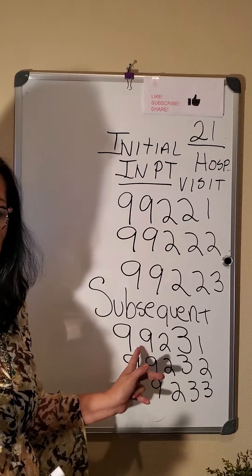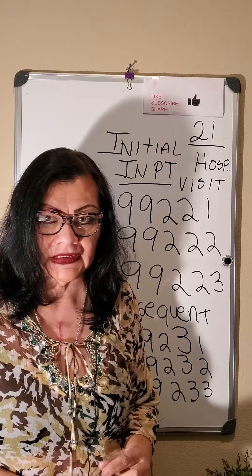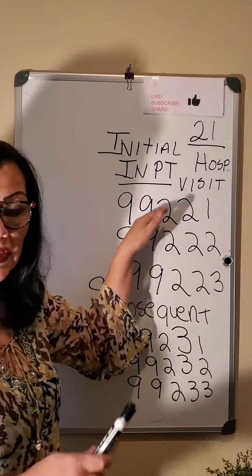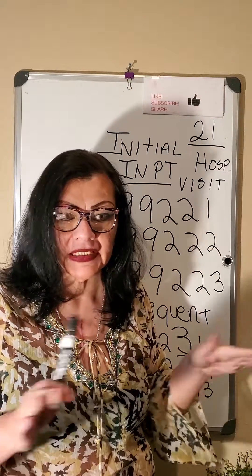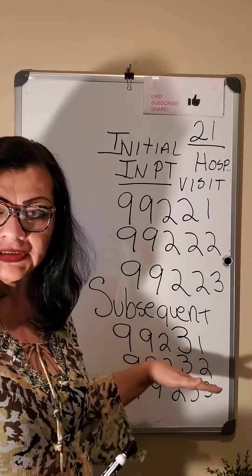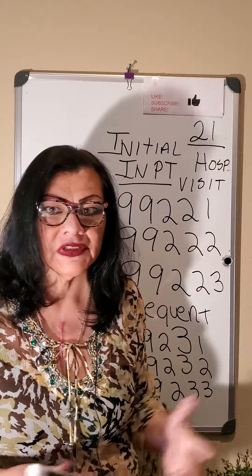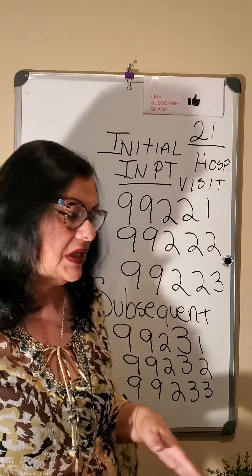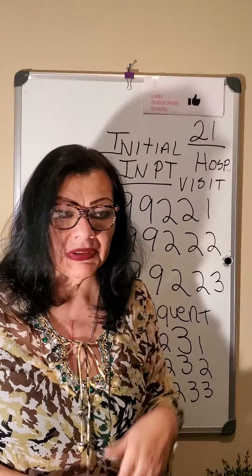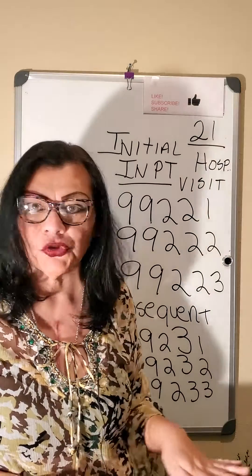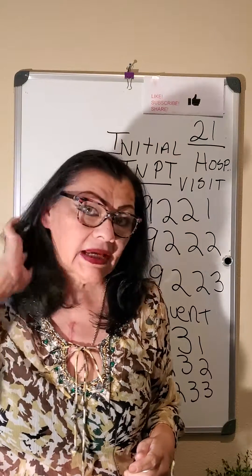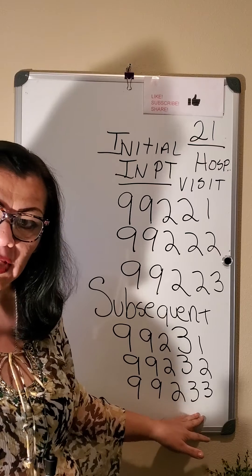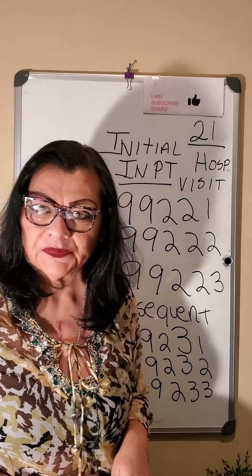This is the subsequent inpatient hospital visit, place of service 21. The initial codes can only be used one time while the patient is admitted. Then for the second, third, fourth, or however many times the doctor sees the patient in the hospital, he can use the subsequent codes. For example, today the doctor saw the patient for a low complexity problem, but tomorrow the patient is not doing well, so the doctor has to make a medical decision with high complexity — then he can use 99233.